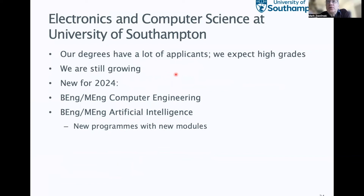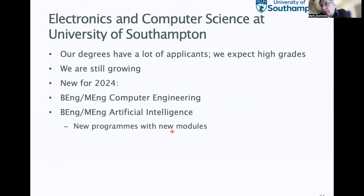We've had lots of applicants and are still growing. We expect very high grades and the number of students this year has increased quite dramatically. To continue this growth, we're starting two new programmes in 2024: computer engineering — which is what I've been talking about — and artificial intelligence. These are entirely new degrees with new modules, not old degrees with new material, because we don't want large mixed classes. They'll have separate modules so students get a much better educational experience. This is the future — bringing together computer science and electronic engineering with artificial intelligence.